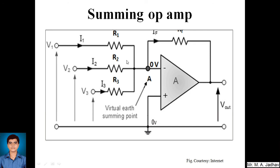At junction X, the sum of currents entering must equal the current leaving. So I = I1 + I2 + I3. By Ohm's law: I1 = V1/R1, I2 = V2/R2, and I3 = V3/R3. By rule one, no current flows into the op-amp input, so the same total current must flow through the feedback resistor RF.